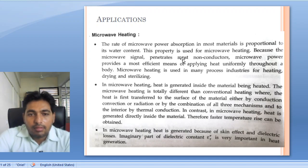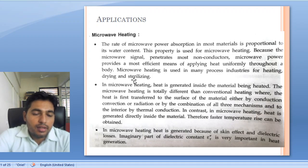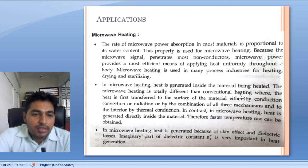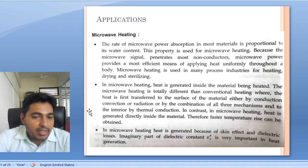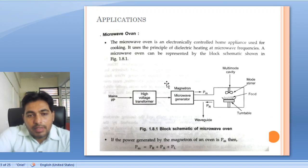Microwave signal penetrates most non-conductors and provides a most efficient means of applying heat uniformly throughout the body. Microwave heating is used in many process industries for heating, drying, and sterilizing. In microwave heating, heat is generated inside the material being heated. This is totally different from conventional heating, where heat is first transferred to the surface of the material by conduction or convection, while in microwave heating the heat is generated directly inside.